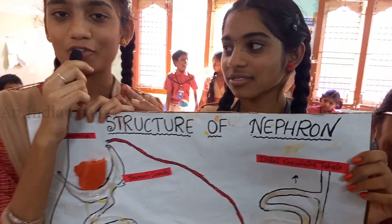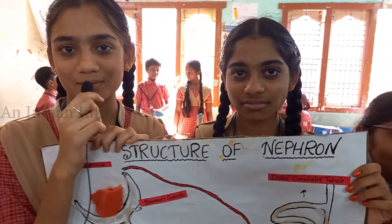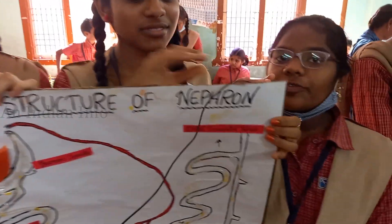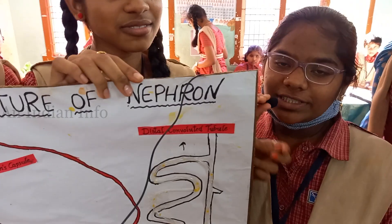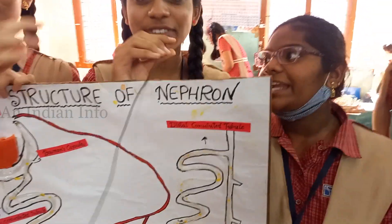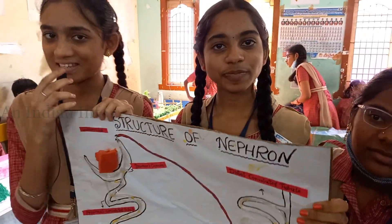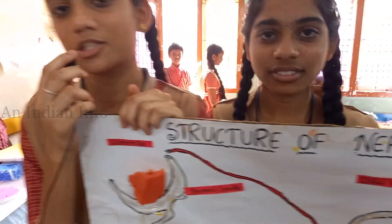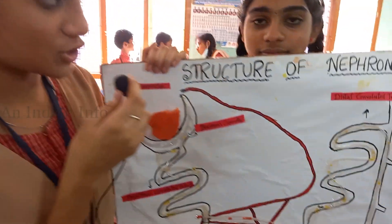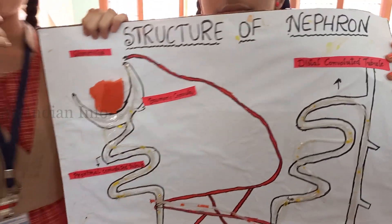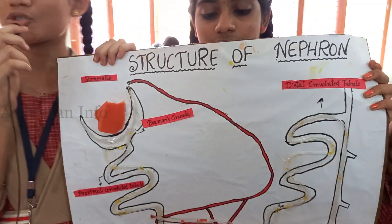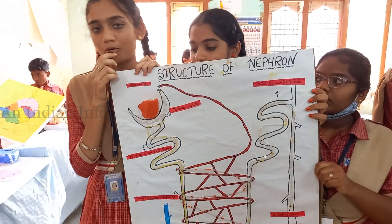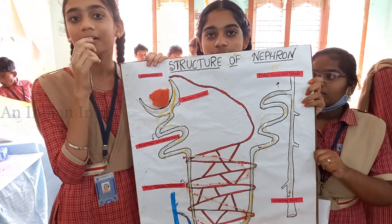Good afternoon sir, good afternoon everyone. My name is Shima Sadia. Good afternoon everyone, this is Joshnam. Good afternoon everyone, this is Tabassum. We are from 9th standard. Today we are participating in science expo. Our experiment is the structure of nephron. The structure of nephron contains two parts. First, the Malpighian body. Second, the Renal body.